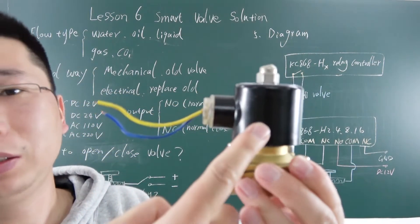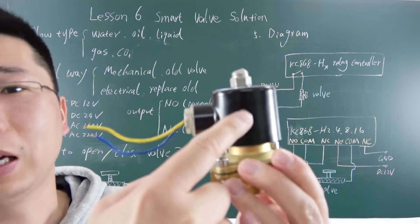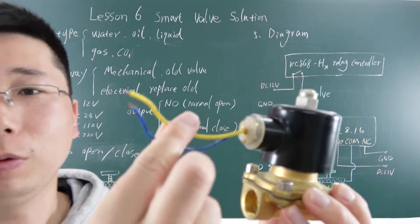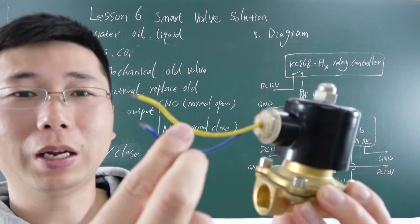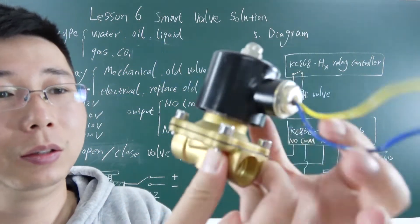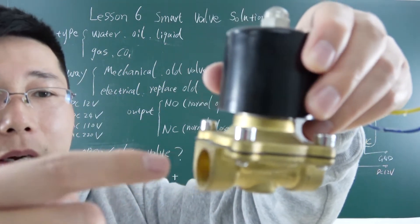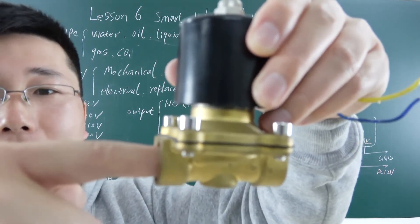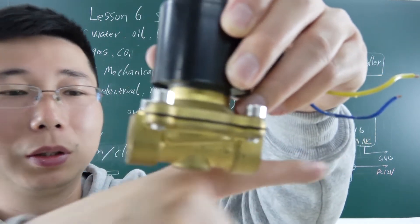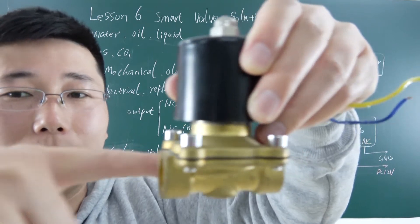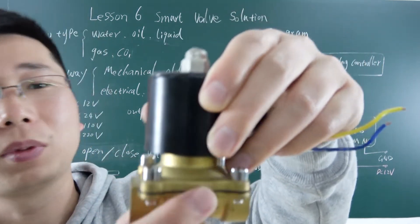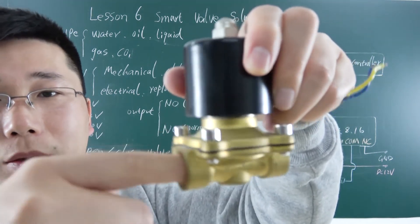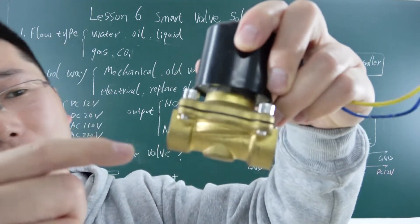The electrical type is like a relay, or has a coil inside the black body. When these two lines have power supply, the water or oil can go through the input point and out the output. If there is no power, it disconnects — it is closed.